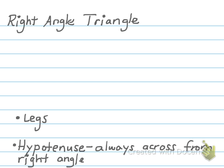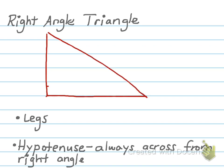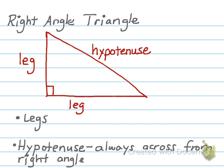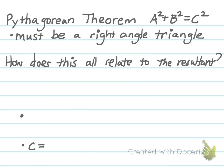A right angle triangle has legs, which are the sides adjacent to or touching the right angle, and then the hypotenuse, which is always across from the right angle. When we have a right angle triangle, we can use the Pythagorean theorem: a squared plus b squared equals c squared. You must have a right angle triangle to use this theorem.